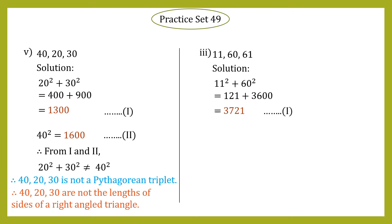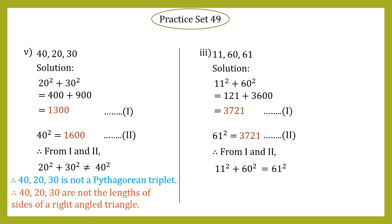121 + 3600 = 3721. This can be taken as equation number 1. Now let's square the largest side, that is 61. 61² = 3721. That is equation number 2. From equation 1 and equation 2, we can see that 11² + 60² = 3721 and 61² = 3721 — both are equal.